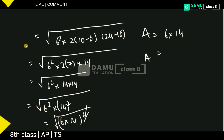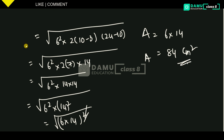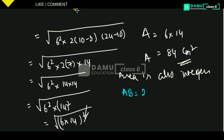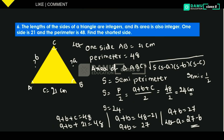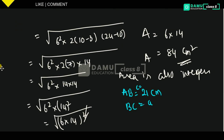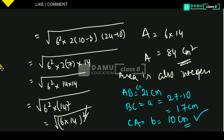The area is 84 square centimeters, which is an integer. So all conditions are satisfied. The sides are: AB equals 21 centimeters, BC equals small a equals 27 minus 10 equals 17 centimeters, and CA equals small b equals 10 centimeters. The shortest side is b, which is 10 centimeters.